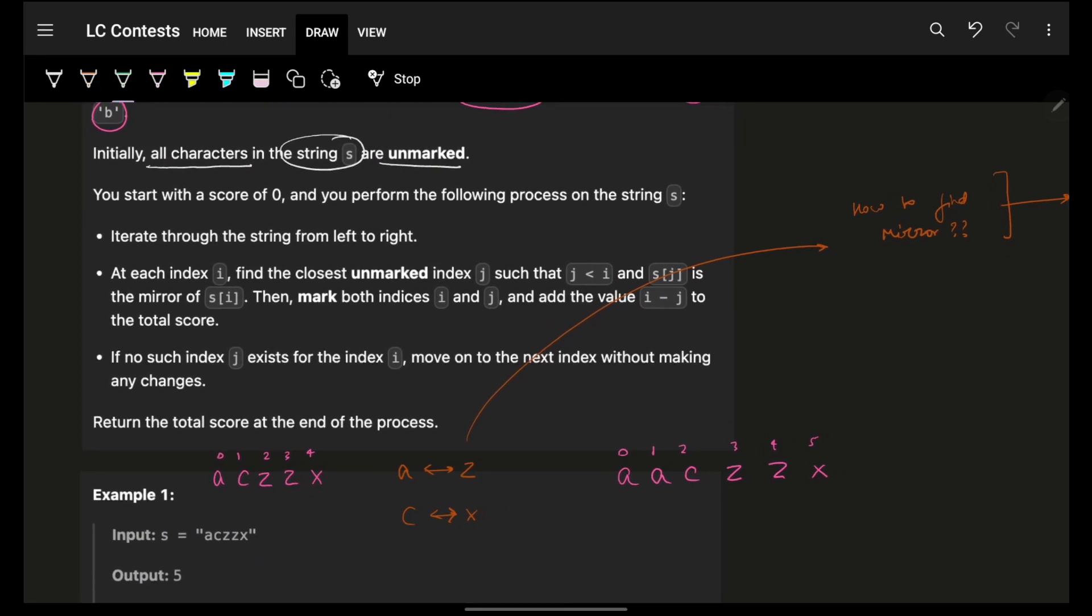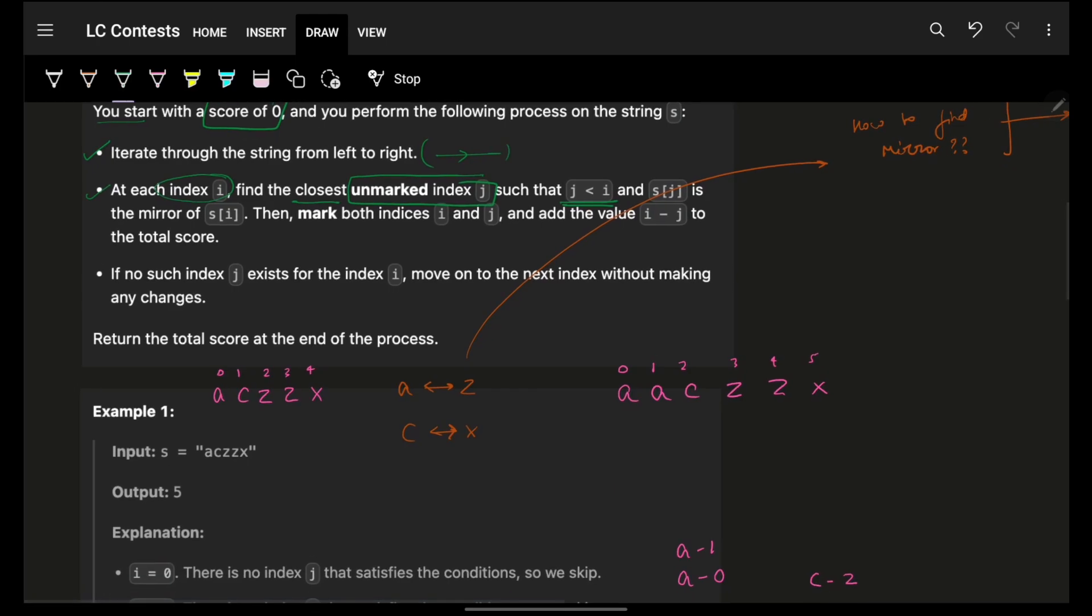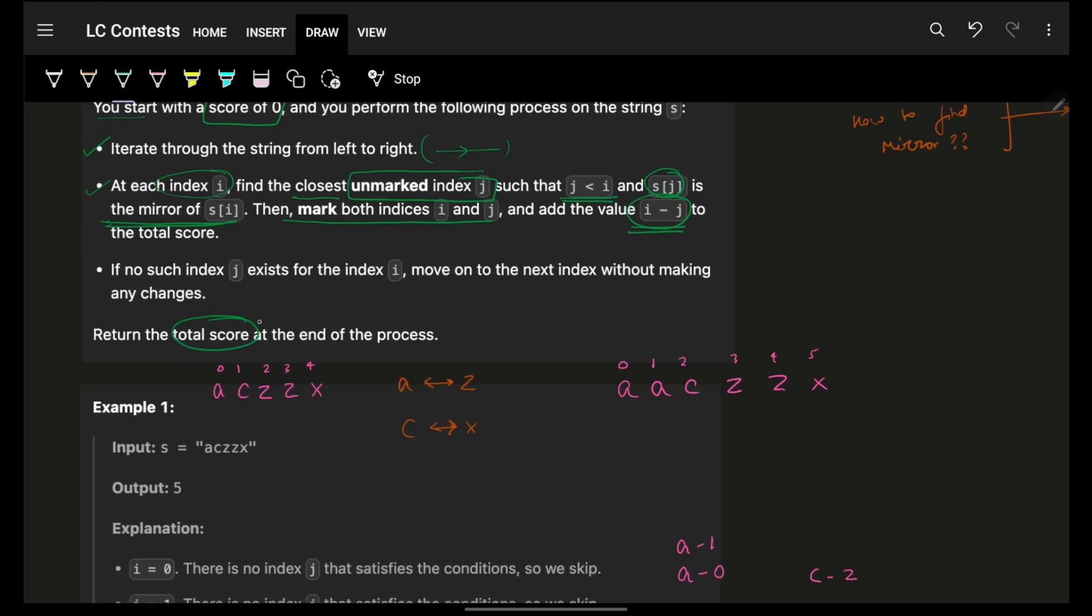What I have to do, I have to start from the left with a score of 0 in the very beginning. And I can perform this operation. The operation is iterate from the left to right. Simply, the order of iteration is given from index 0 to the final index N minus 1. At each index, find the closest unmarked index J such that it is not the same index.